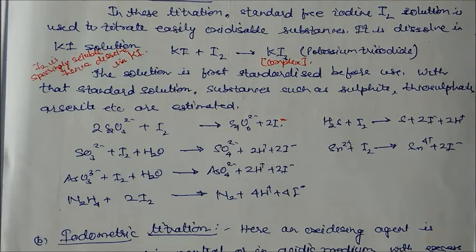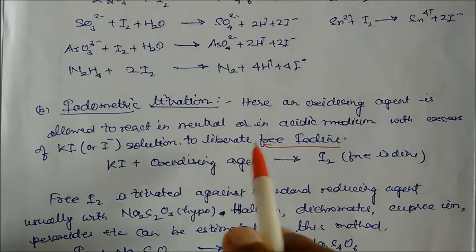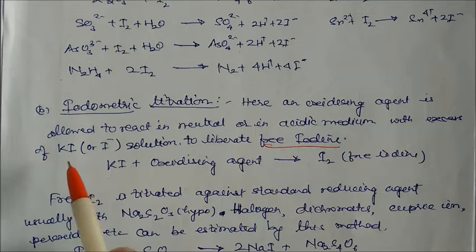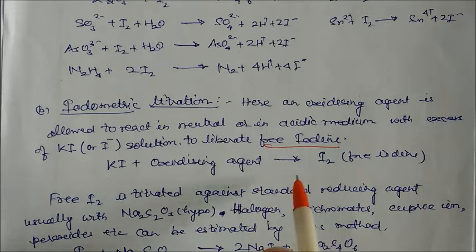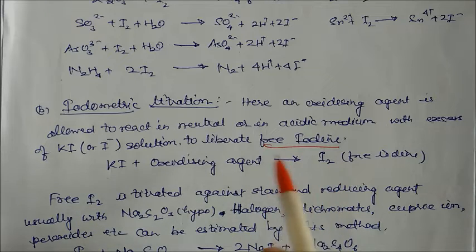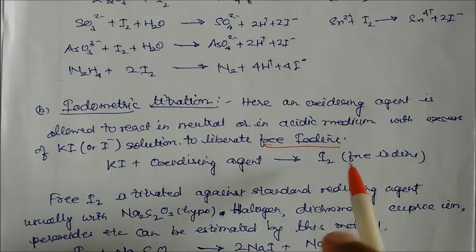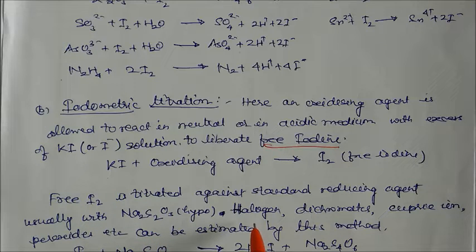In iodometric titration, an oxidizing agent is allowed to react in neutral or acidic medium with excess potassium iodide solution to liberate free iodine. We are not giving iodine directly — it is generated indirectly. This free iodine is then titrated against a standard reducing agent like hypo. Substances like halogens, dichromate, cupric ions, and peroxide can be estimated by this method.